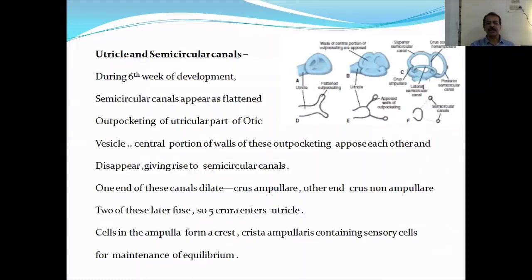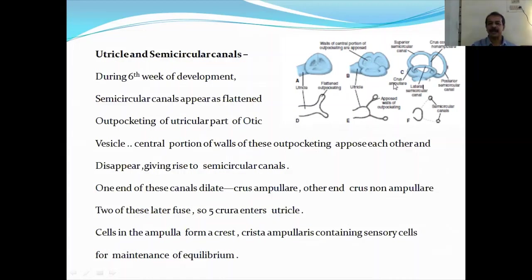Coming to the utricle and the semicircular canals. During the sixth week of development, the semicircular canals appear as flattened outpocketings of the utricular part of the otic vesicle. The central portion of the walls of these outpocketings oppose each other and disappear, giving rise to the three semicircular canals.